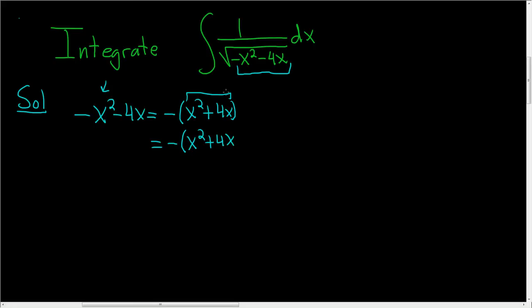And now you look at the coefficient of x which is 4. Then you divide it by 2 and you square it. So this is simply 2 squared which is 4. So we add that and then you close the parentheses.